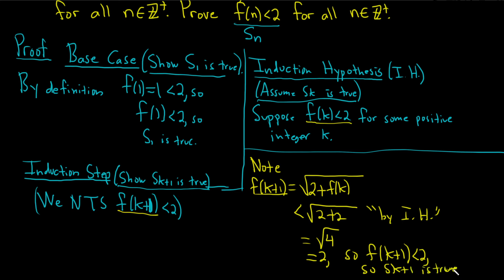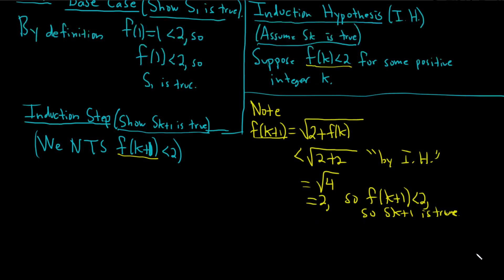Scroll down, make sure you can see. Not sure if it's capturing the whole screen. So less than 2, S sub k plus 1 is true. So we've shown what we're trying to show. Therefore, we're done with the proof. Thus, by the principle of mathematical induction, we have that f(n) is less than 2 for all positive integers.